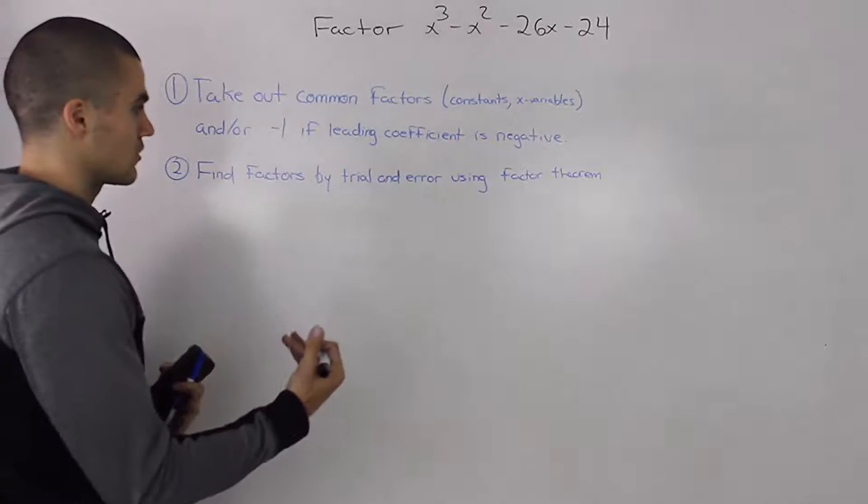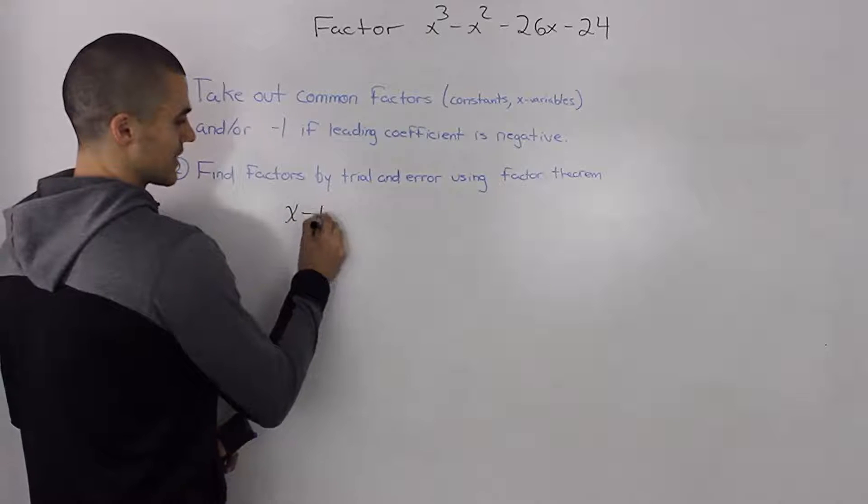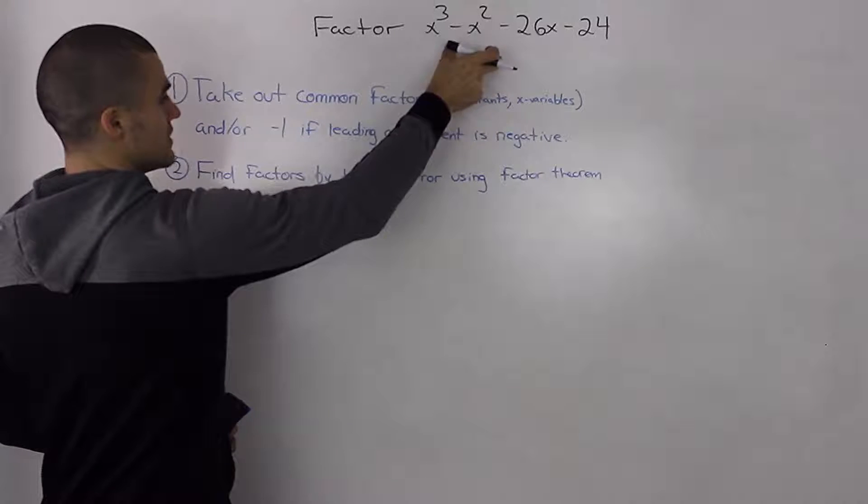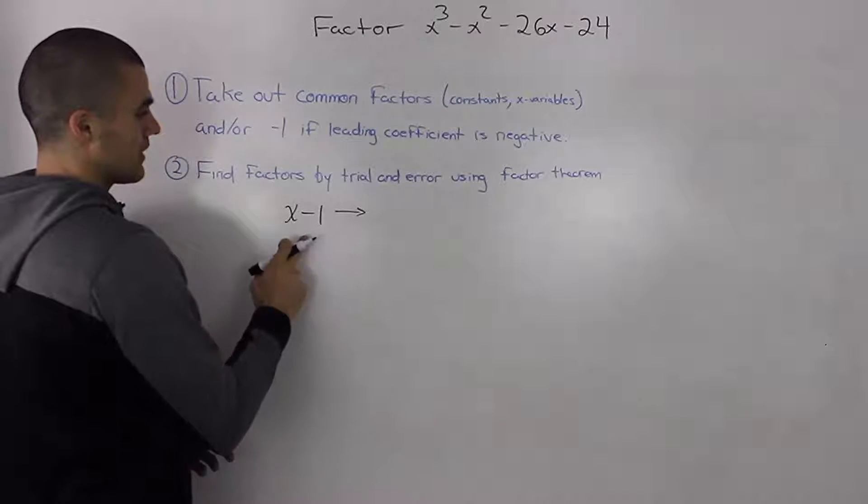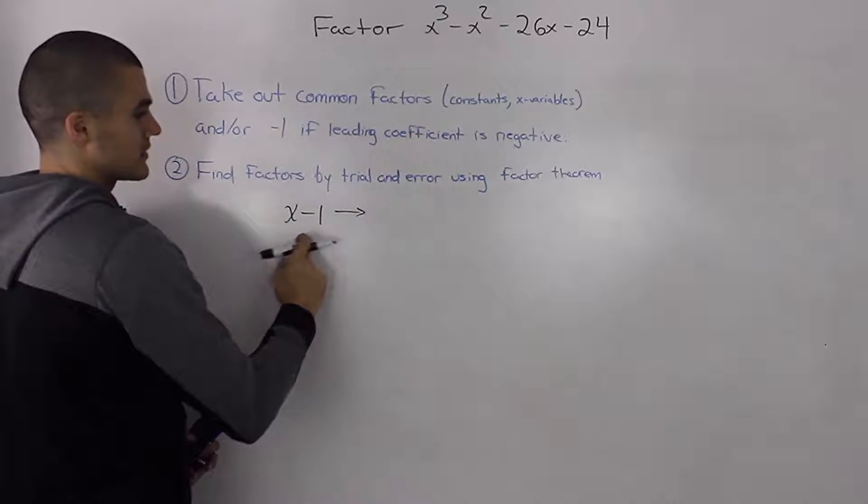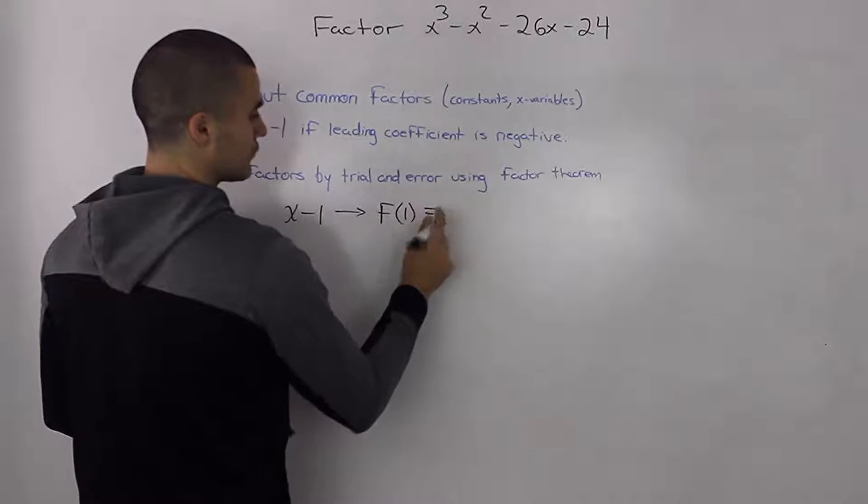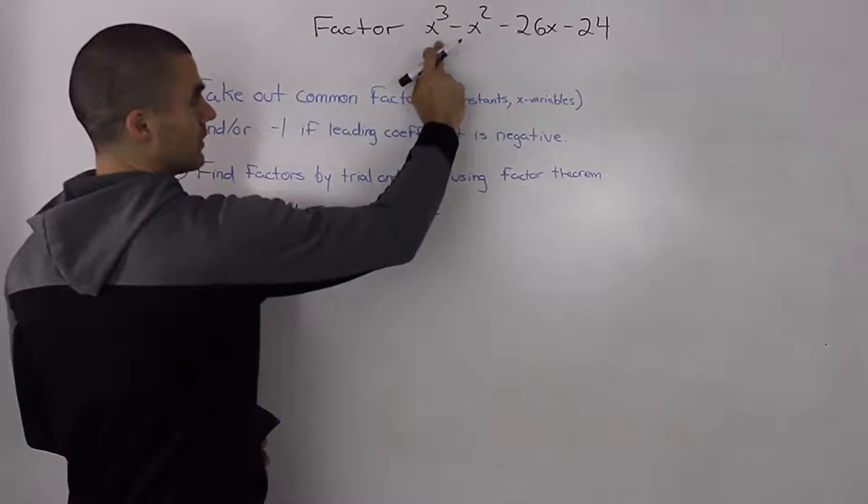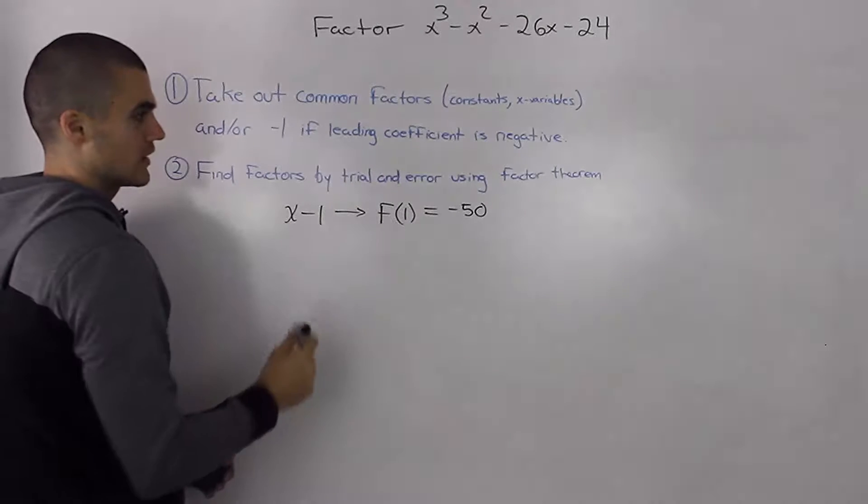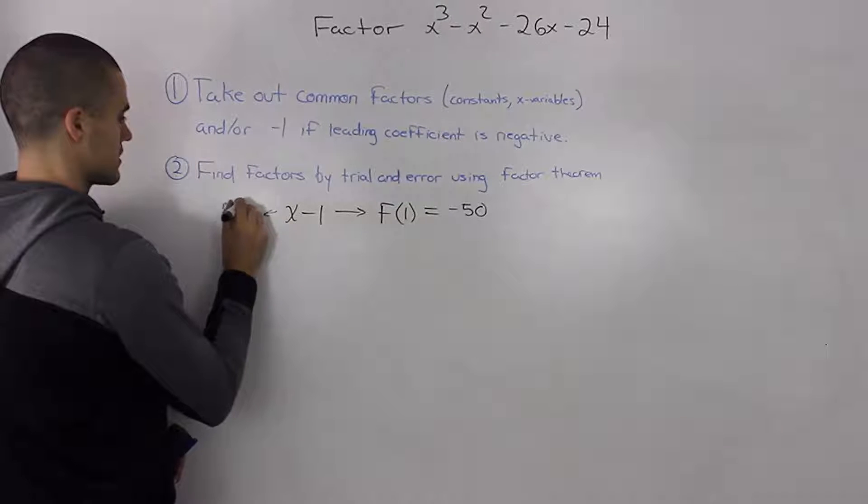So I usually like to start with really simple plus or minus one. For example, let's test if x minus one is a factor of this polynomial. The way we would do that, we would find what the remainder would be if we divided this polynomial by x minus one. So we could use the remainder theorem and just plug in our k value of one. If we do that, f of one, plugging in one for the x values, we would get negative fifty. So we know x minus one is not a factor.